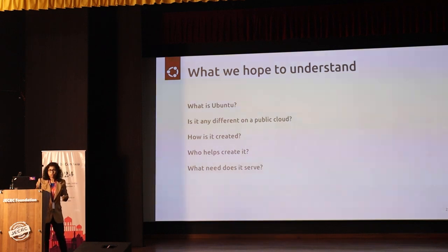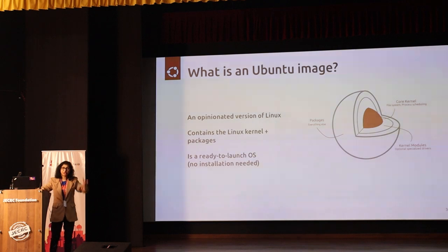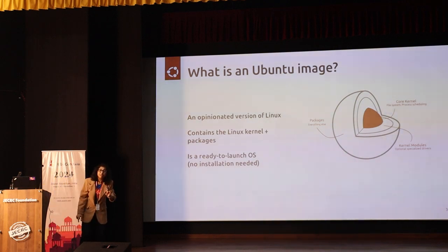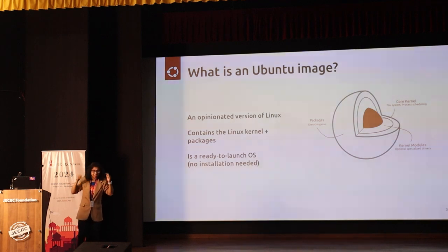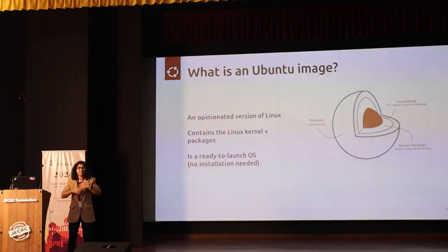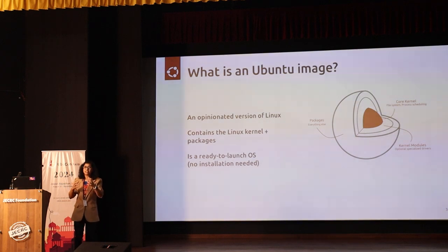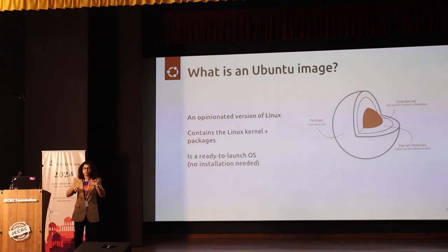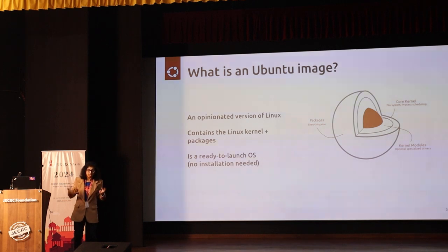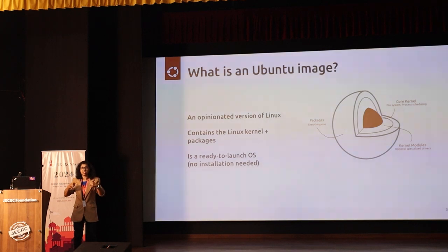Let's start with what is Ubuntu. I'm going to talk about what is an Ubuntu image. For people who don't know Ubuntu, it's an operating system — like Windows or Mac, but Linux-based. It's an opinionated version of Linux. It's open source. When I say Ubuntu image, it's a ready-to-launch operating system. It goes into a hardware machine. If you spawn up an instance on any of the clouds with an Ubuntu image, you can just start it — no ISO, no CD, no folder copying or installing. It directly starts.